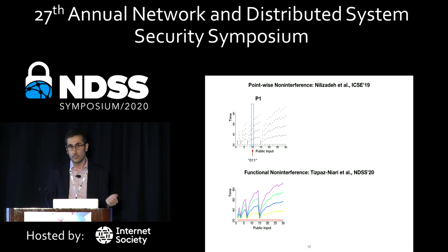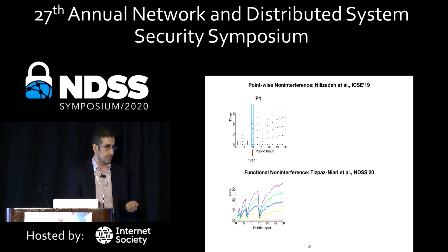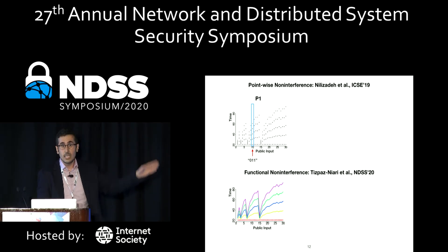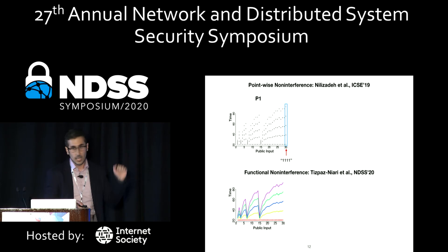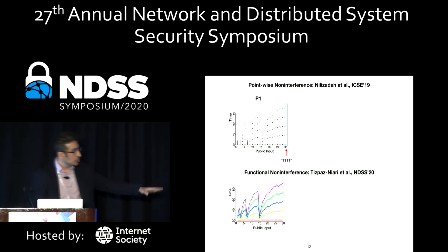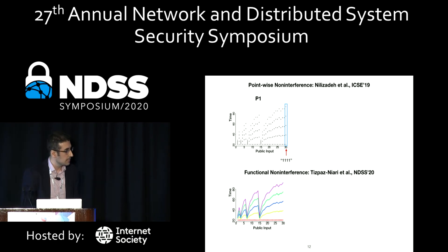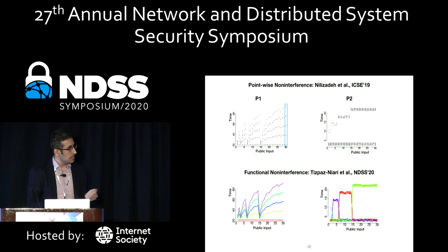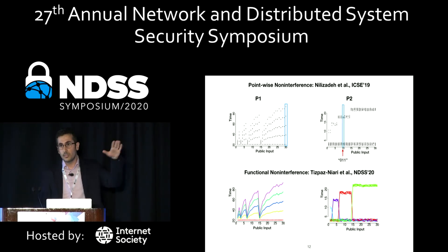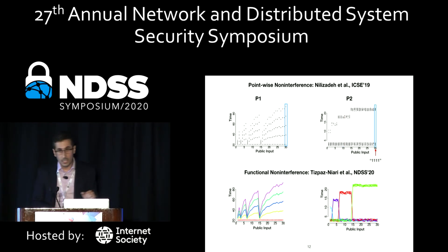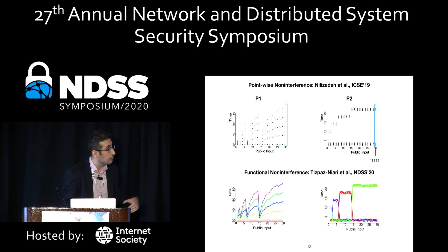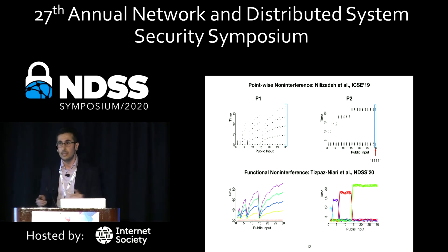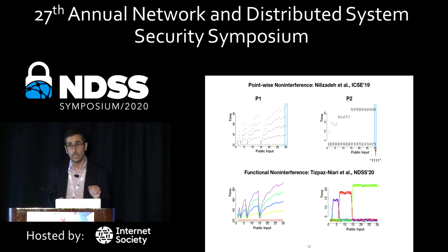Now let's turn to program P2, which is known to leak the length of the secret. With point-wise observation and fixing the public input to any value, we observe two classes in the response time. But the functional observation shows something different — it shows four classes of functions. And it matches reality: we have four possible lengths of the secret. So it turns out that the existing definition may give a false sense of security, while this functional definition can capture the realistic one.